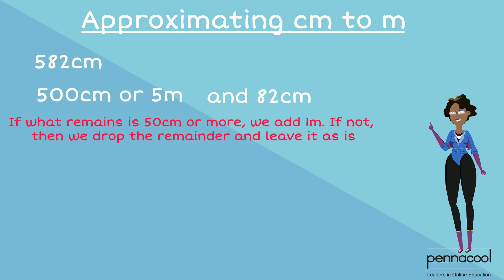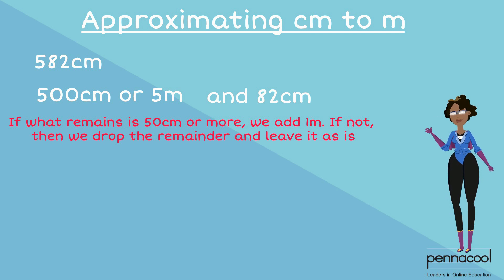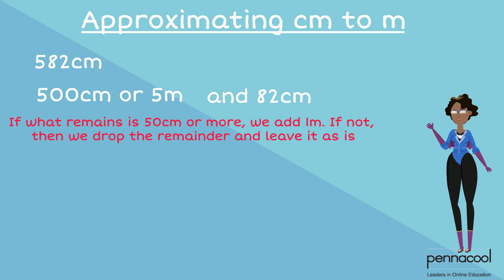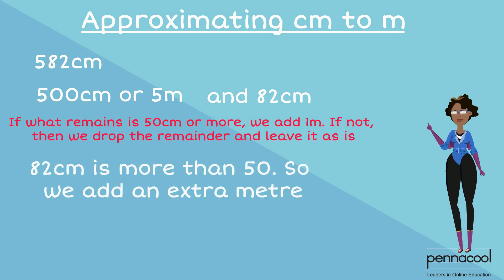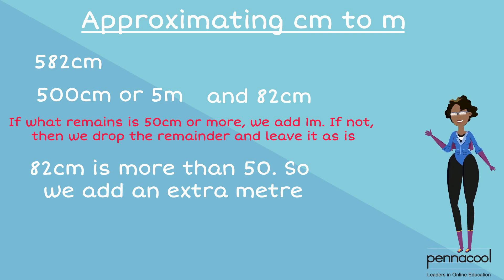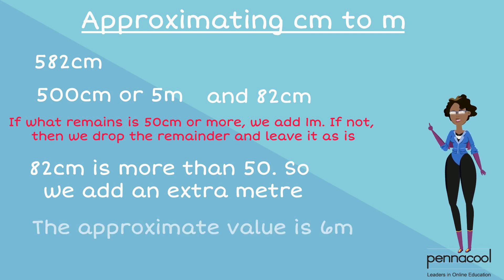If what remains is 50 centimeters or more, we add 1 meter. On the other hand, if what remains is less than 50 centimeters, we drop the remainder and leave our number of meters as is. In this case we have 82 centimeters, which is more than 50. This means we must add an extra meter, giving us 6 meters as the approximation.